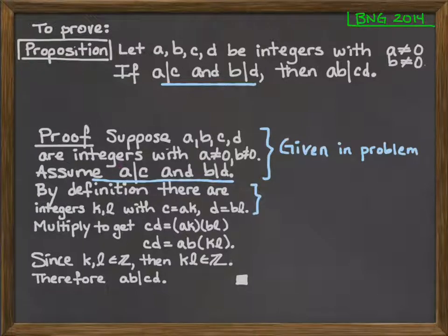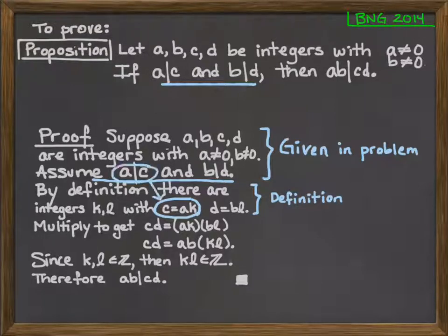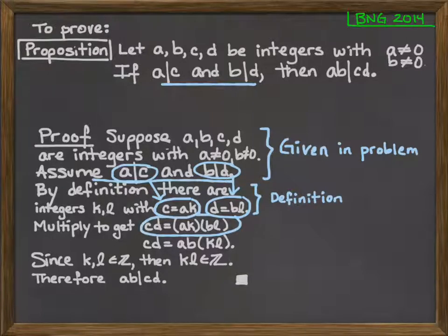Next I'm going to look at these two lines. These two lines say, by definition, there are integers k and l, with c equals ak, and d equals bl. So those definitions are based upon what I know, or what I've assumed, about a dividing c, and b dividing d. So that's the definition. c equals ak, that follows from a divides c. d equals bl, to know that's true, we would need to know that b divides d, and we have that there as well. And then finally those two can be put together in a clear way to get this statement, cd equals ak times bl.